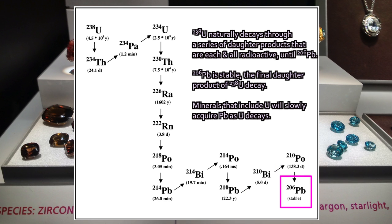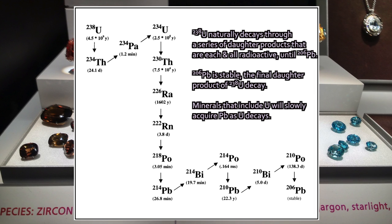Lead-206 is a stable radiogenic daughter product from uranium-238 decay. If you have minerals that contain uranium when they form, over time their complement of uranium will decay, turning eventually into lead. We can look at the ratio of uranium to lead in a rock and determine from that information how many half-lives have passed since that rock was produced through natural processes. We use a few particular minerals that work really well for this.